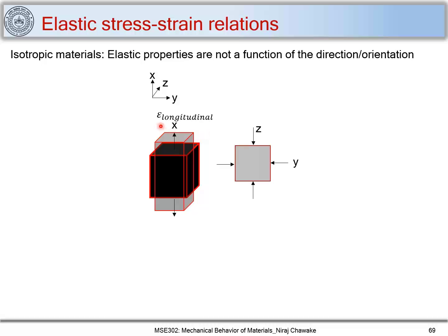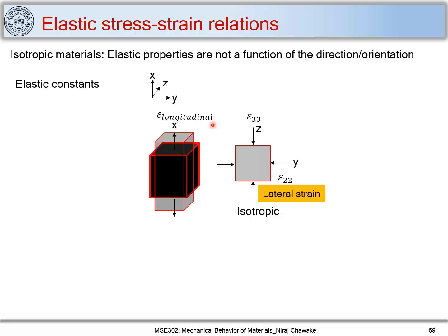When this member elongates, it produces a strain along the x direction — I call it the longitudinal strain. We have seen that the strains produced along z and y for an isotropic material remain equal, and I call them epsilon 3 3 and epsilon 2 2. These are normal strains. Epsilon 3 3 and epsilon 2 2 are also called lateral strains, and we have related this lateral strain to the longitudinal strain using a constant called Poisson's ratio.